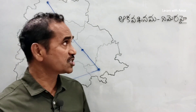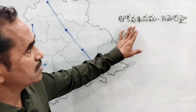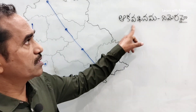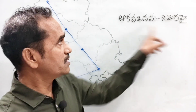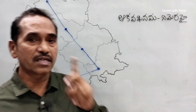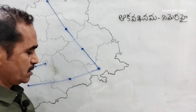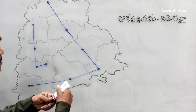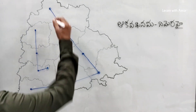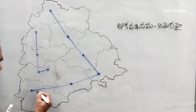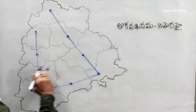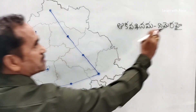In the first step, we learn a Telugu phrase. By learning this Telugu phrase, we cover 10 districts. We go in this direction first — it covers 6 districts. Then we go in this direction, which covers 4 districts.